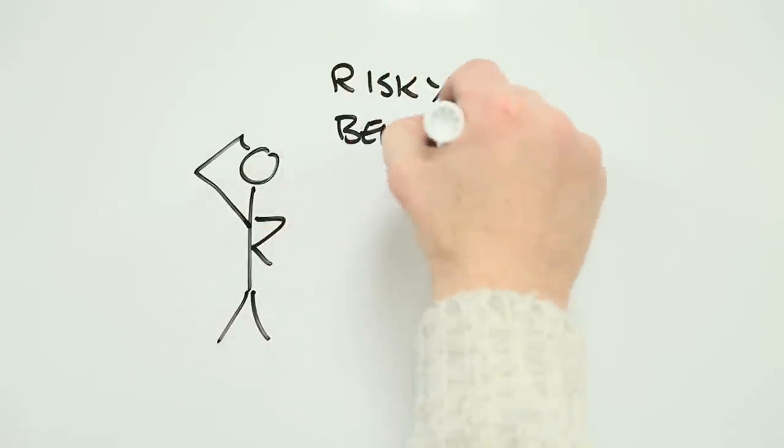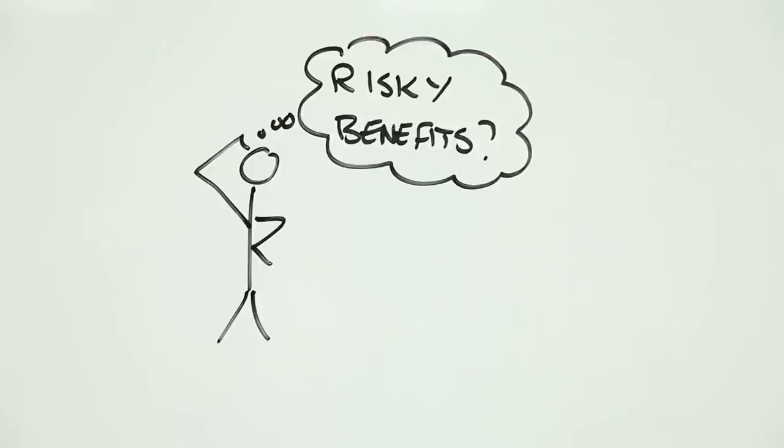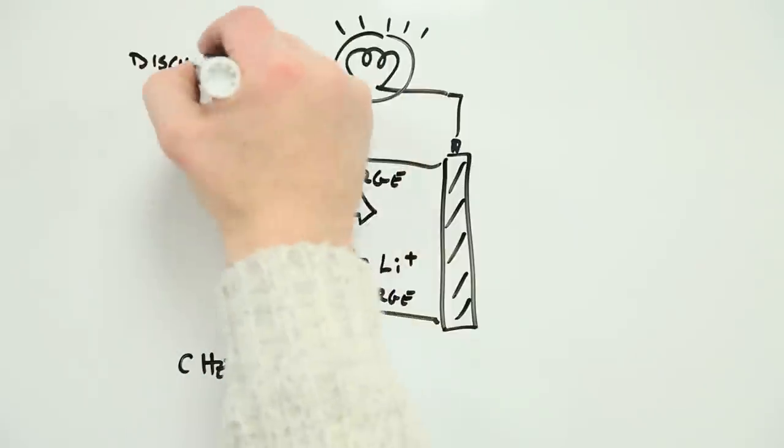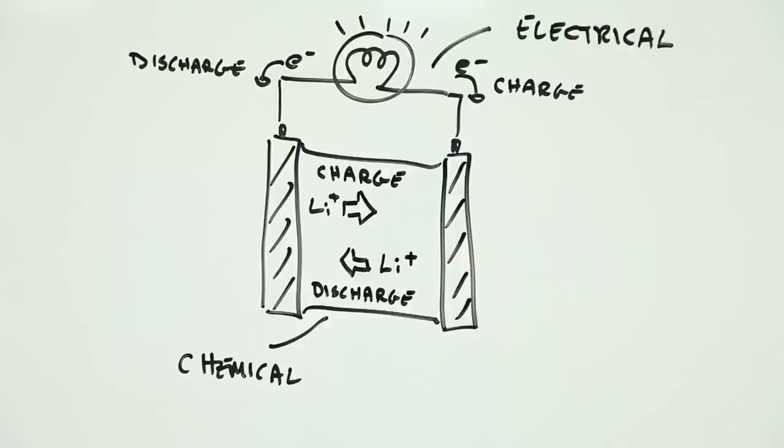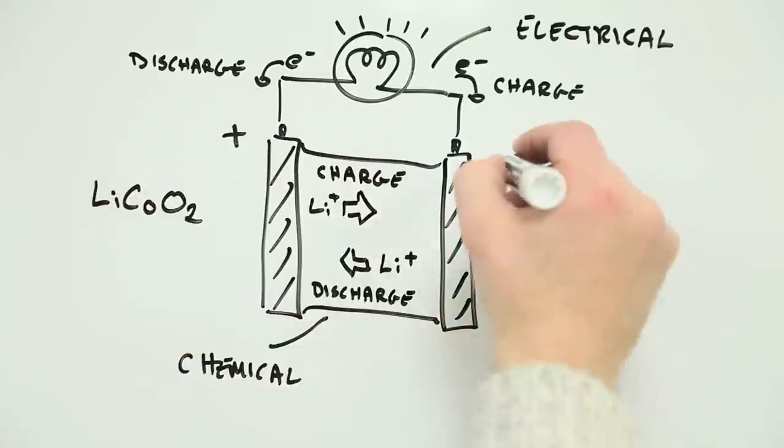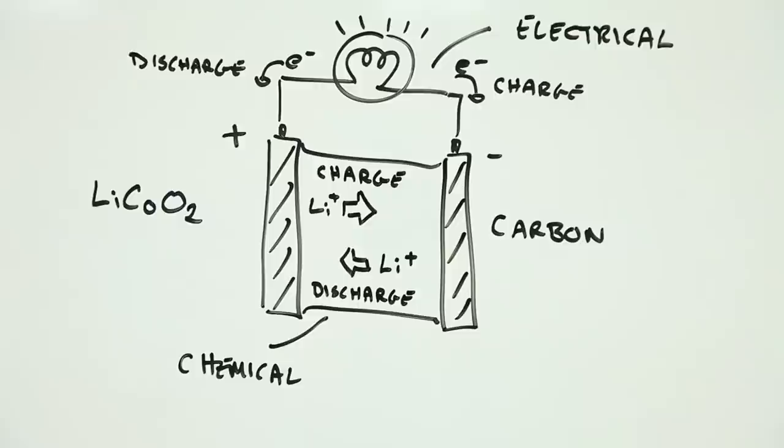But these benefits are not risk free. Lithium-ion batteries store energy chemically and release it electrically. Lithium-rich materials such as lithium cobalt oxide, the battery's positive electrode, is separated from a lithium storing material such as carbon, the negative electrode. The stuff that separates the electrodes, the electrolyte, allows positively charged lithium ions to move from one material to the other.